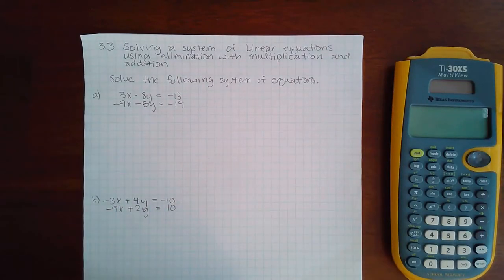Okay, this is 3.3 solving a system of linear equations using elimination with multiplication and addition. This one is going to be a lot like the last one. Part B had to multiply by something, okay. The problem is that it's not just going to be a negative this time.